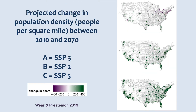A different approach was taken for looking at population density in the United States. The maps on the right show, under three SSPs, how population density could change between 2010 and 2070. SSP-3, a world with high levels of regional rivalry, could see declines in population density in parts of the Northeast and the Midwest. Under SSP-5, a world that uses fossil fuel primarily for development, you can see much higher population density — with implications for risks such as heat-related mortality.